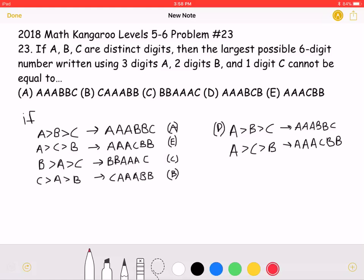If A were to be greater than B, greater than C, our number would be AAABBC, which is answer choice A. Because this is a possible value, answer choice A must be incorrect.